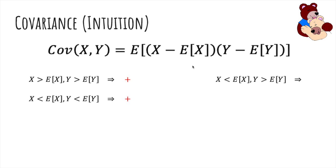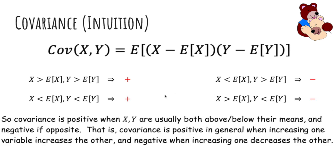And if there are opposite signs, so if X is less than its mean but Y is greater, then we'll get a negative term. And if the opposite holds, it's also negative. So covariance is positive when X and Y are generally both above or below their means, and negative if they're opposites. That is, covariance is positive in general when increasing one variable leads to an increase in the other, and negative when increasing one decreases the other.